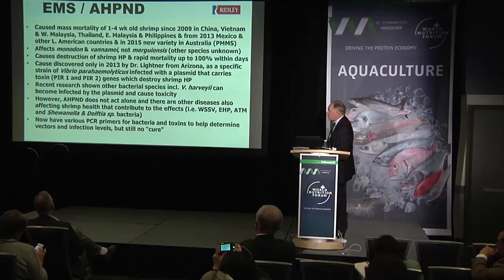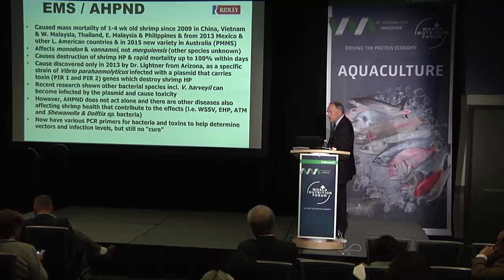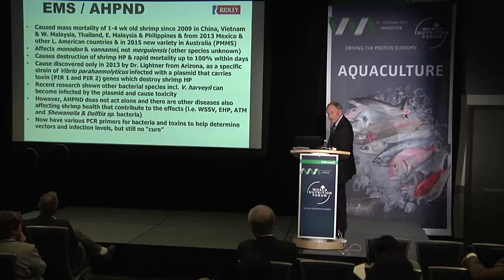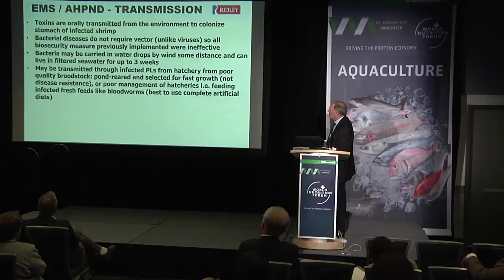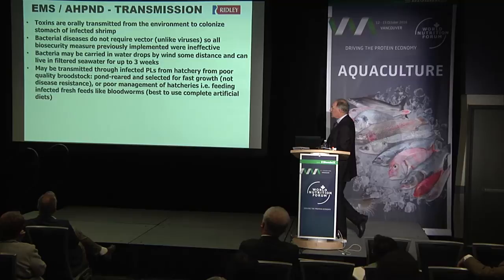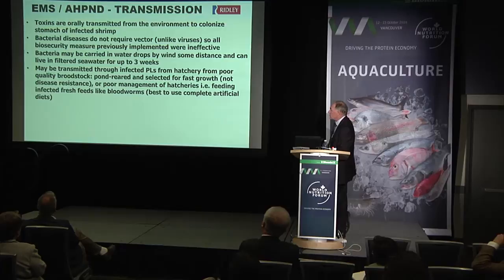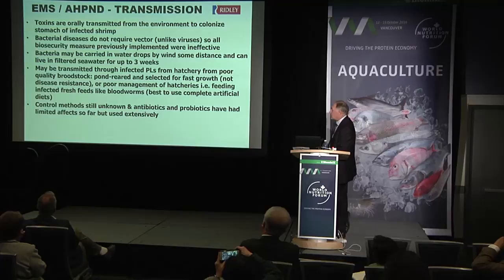We now have various PCR primers to identify both the strain of bacteria and the toxins, so we can look at where it's coming from, how it's being transmitted, and how it gets from one farm to another or from hatchery to farm. The transmission is from the environment to the stomach of the infected shrimp. Biosecurity measures adopted to cope with viruses don't work anymore for bacteria. The bacteria can even be carried in water droplets and spread from pond to pond, and it's also spread widely through post larvae from the hatchery. People have been using antibiotics and probiotics but they haven't been very effective.